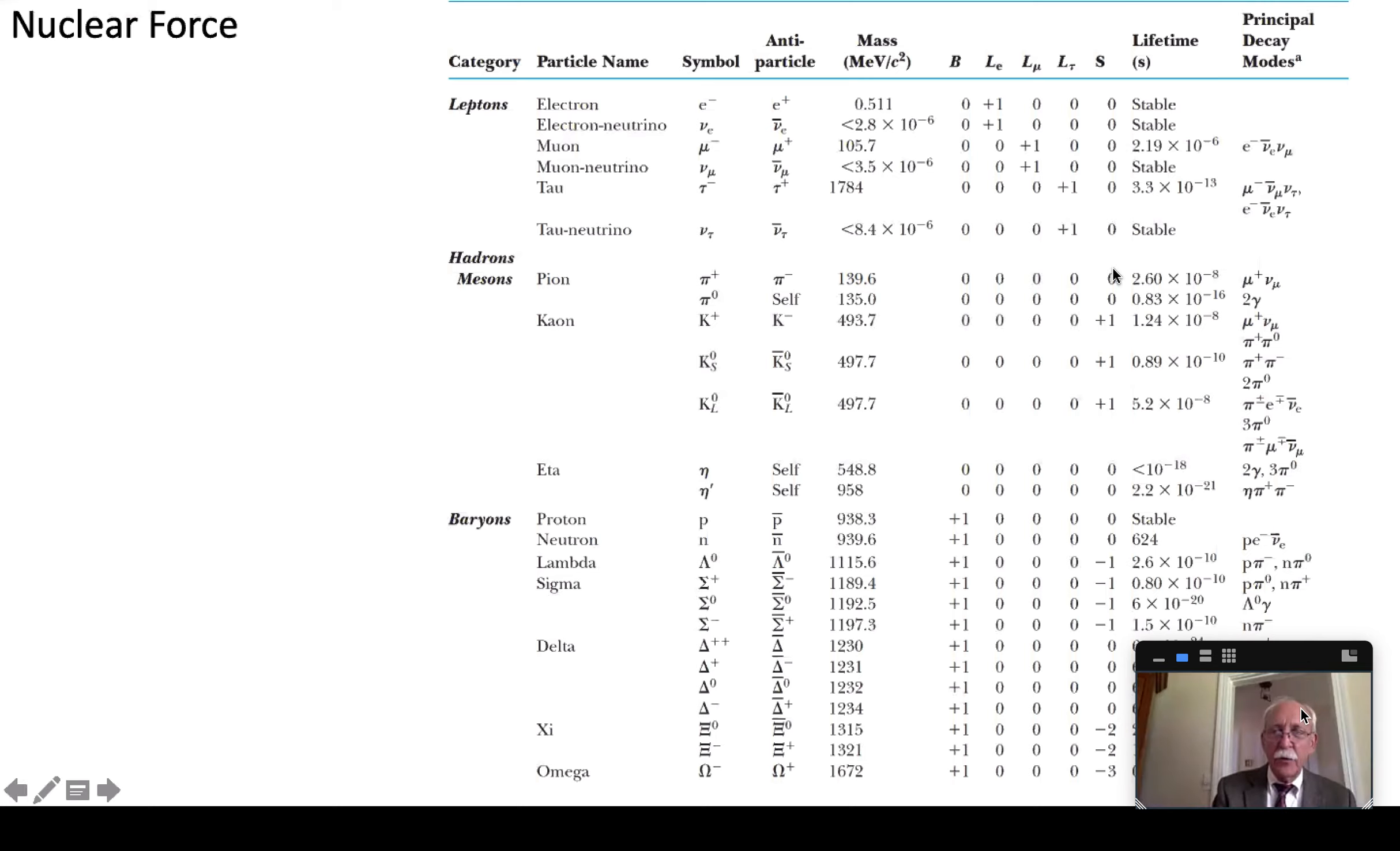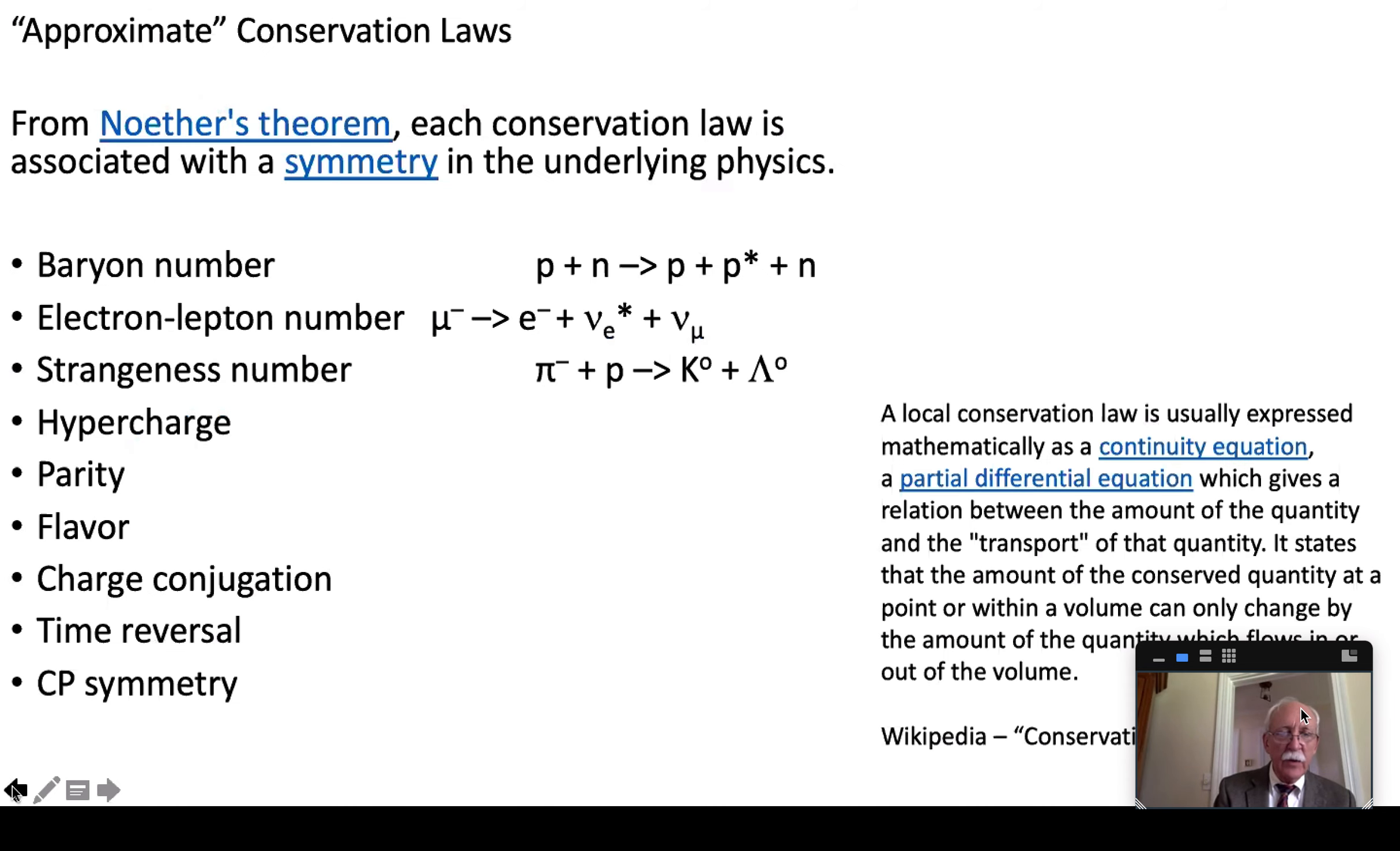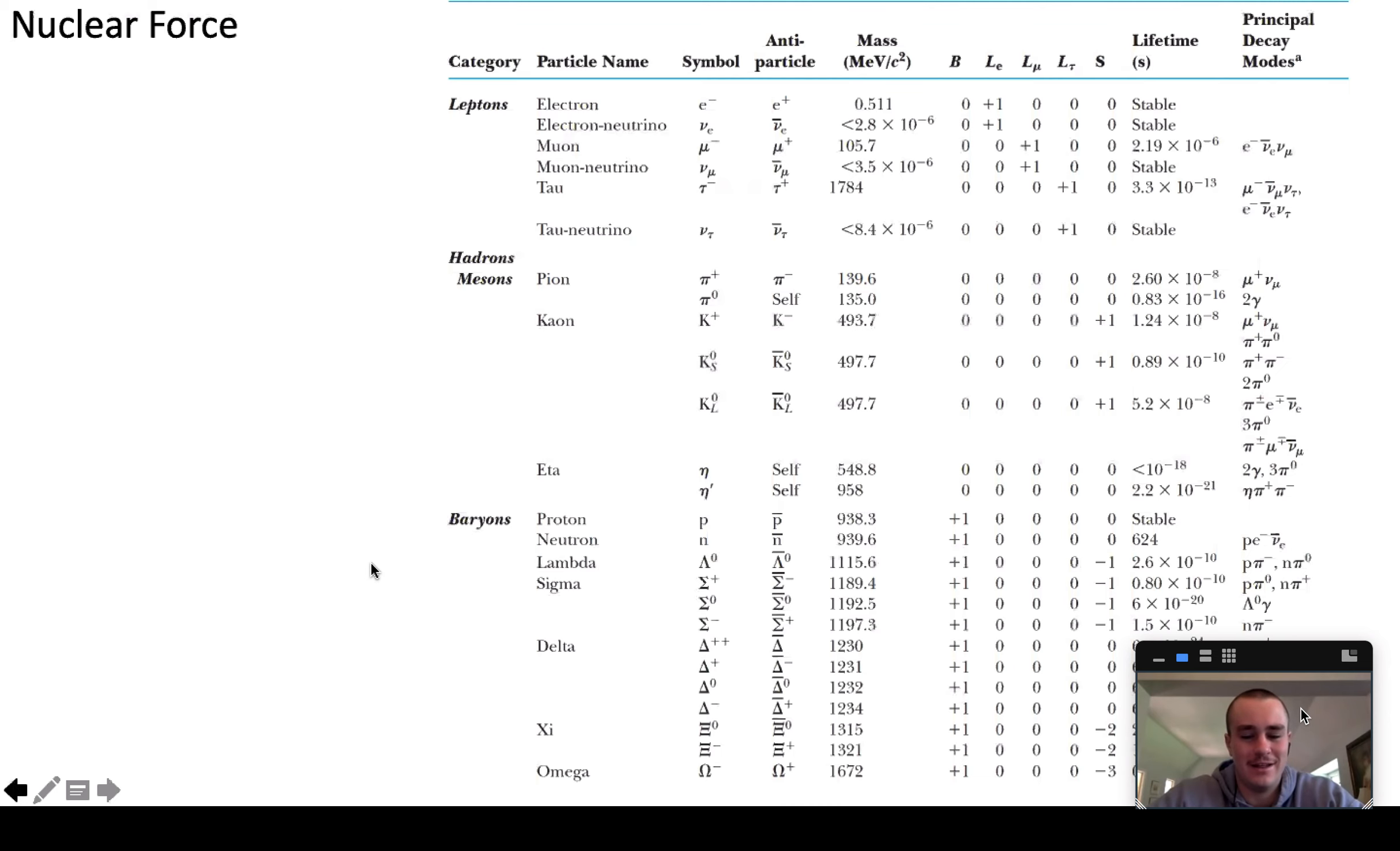Pion no strangeness number. Proton no strangeness number. Where's the lambda? Ah there's the lambda. Minus one for strangeness. And what was the other one? The K was it a K-on? I've forgotten now. Yeah the K-0. K-on. What's the strangeness number for a K meson? Plus one.